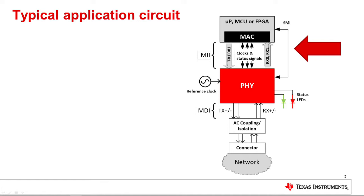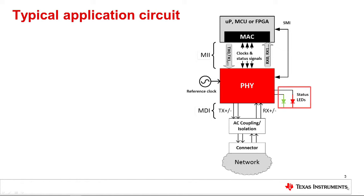The PHY's network connection is called the Media Dependent Interface, or MDI. Unlike the MII, the signaling characteristics of the MDI depends on the nature of the physical channel, which could be either copper or fiber. The PHY usually provides general purpose input-output pins, or GPIO, which typically can be used to either drive status LEDs or to provide access to other internal signals. When used as LED drivers, they can give visual indications of link conditions such as speed or status.